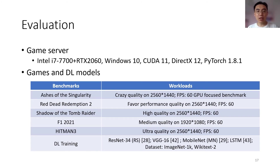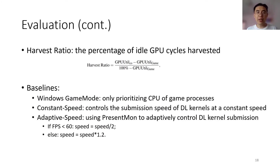We evaluate PaddleFish on a gaming server with an Intel i7 CPU and NVIDIA RTX 2060 GPU, which has comparable flops with cloud gaming GPUs. We evaluate five popular games and four popular deep learning models with different configurations. To evaluate how much GPU utilization is harvested, we define a metric called cost-harvest ratio that calculates the percentage of idle GPU cycles harvested. We compare PaddleFish with three baselines: Windows built-in game mode (CPU priority only), a constant speed baseline controlling DL kernel submission at constant speed, and an adaptive speed baseline using Windows FPS monitoring to adaptively control kernel submission.